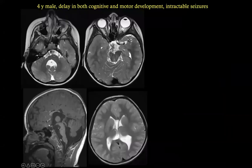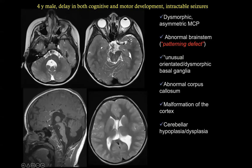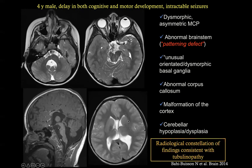Finally, look at this combination of findings in a four-year-old: a patterning defect where the pons has the same height as the midbrain and medulla oblongata, a slightly small cerebellar vermis, a small corpus callosum, anteriorly rotated basal ganglia, possible polymicrogyria, and a dysplastic vermis. This combination — dysmorphic brainstem, particularly the middle cerebellar peduncle, patterning defect, corpus callosum abnormality, cortical malformation, and unusually oriented basal ganglia — strongly suggests tubulinopathy, whose phenotype is variable but characterized by posterior fossa malformation combined with supratentorial brain malformation.